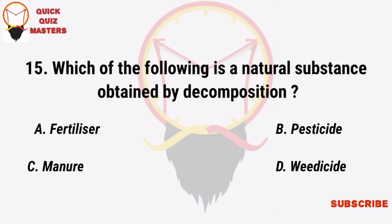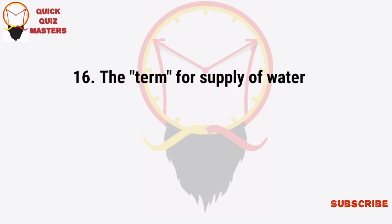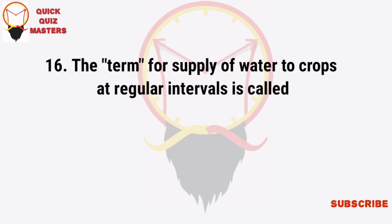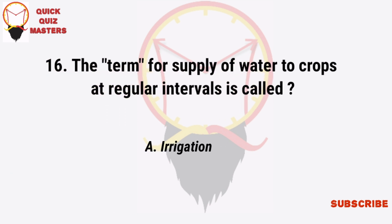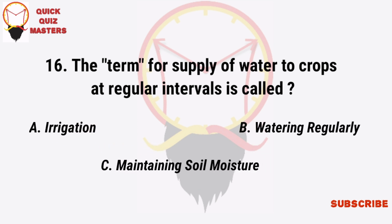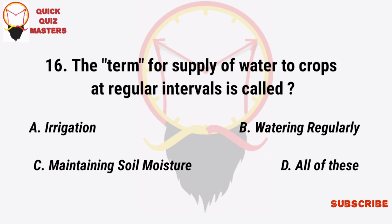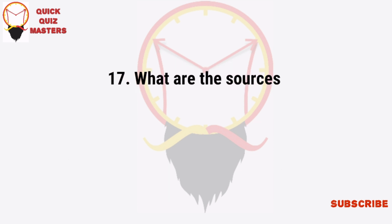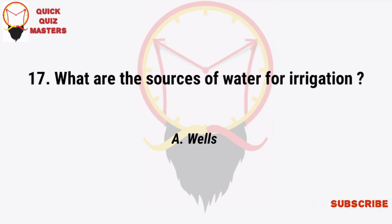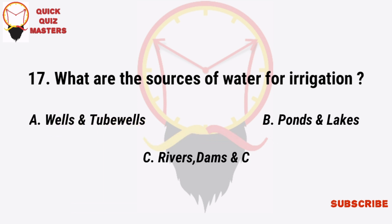The term for supply of water to crops at regular intervals is called irrigation, watering regularly, maintaining soil moisture, or all of these. What are the sources of water for irrigation? Wells and tube wells, pools, pools and lakes, rivers, dams and canals — all of these.